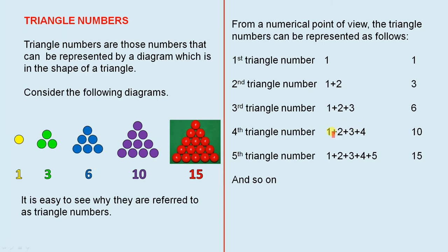The fourth triangle number is one plus two plus three plus four to give you ten. And that's that shape here. The fifth triangle number is those numbers added together to give you fifteen.